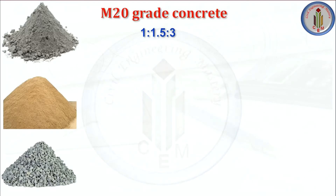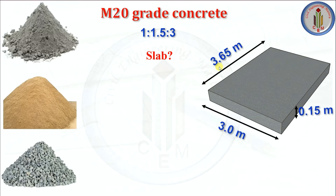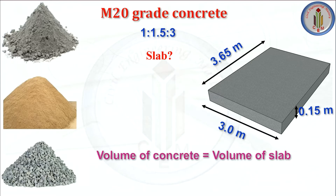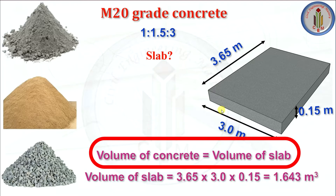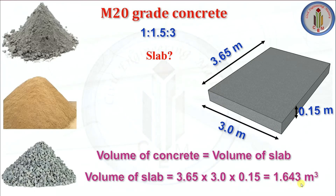The characteristic compressive strength of M20 grade concrete is 20 Newton per millimeter square. We know the mix ratio. Now let's start the calculation for slab. The slab size is 3.65 by 3 meter and the depth of the slab is 0.15 meter, which is 6 inches. Volume of concrete equals volume of the slab — length multiplied by breadth multiplied by depth — so we get an overall volume of 1.643 meter cube.